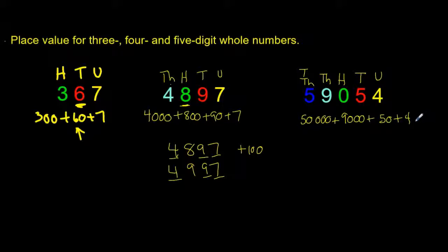Now if you were asked to add 100 to that number, the only digit in that case that would change would be the 0, and that 0 will become a 1. So you would be left with 59,154.